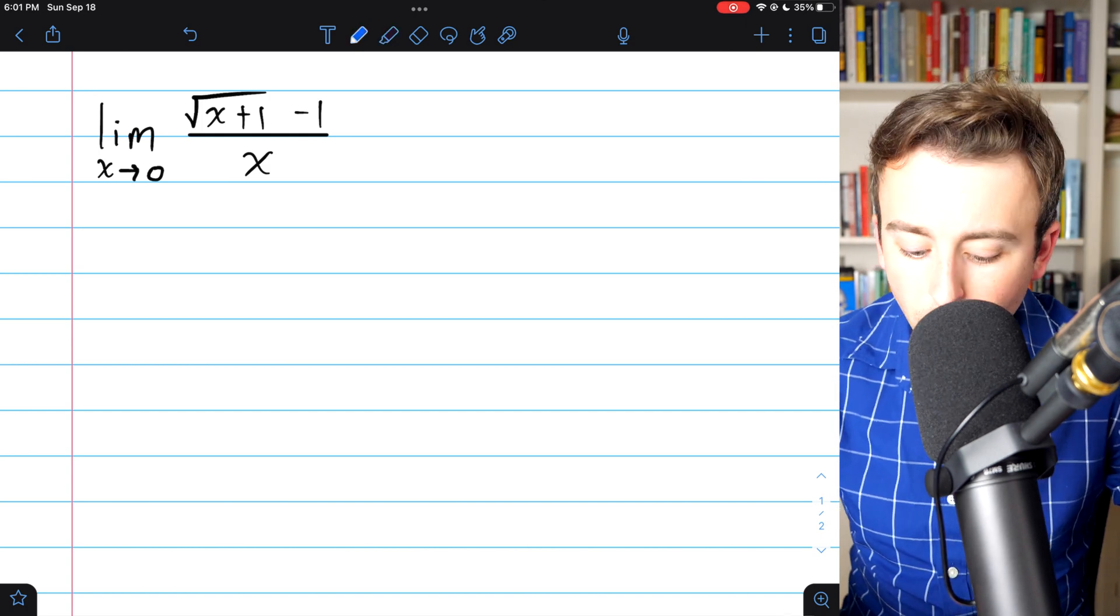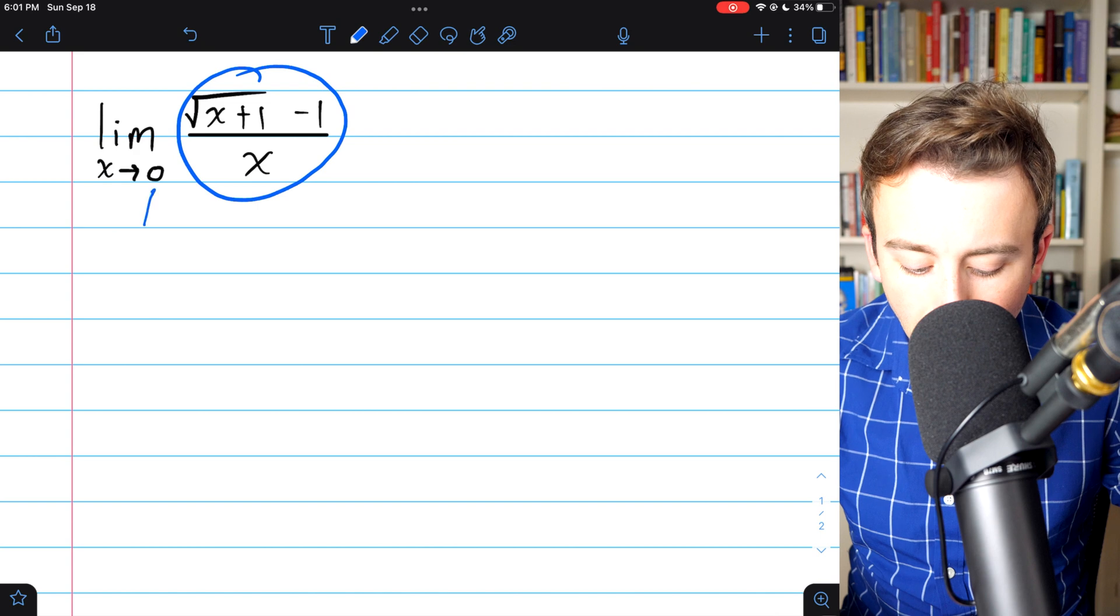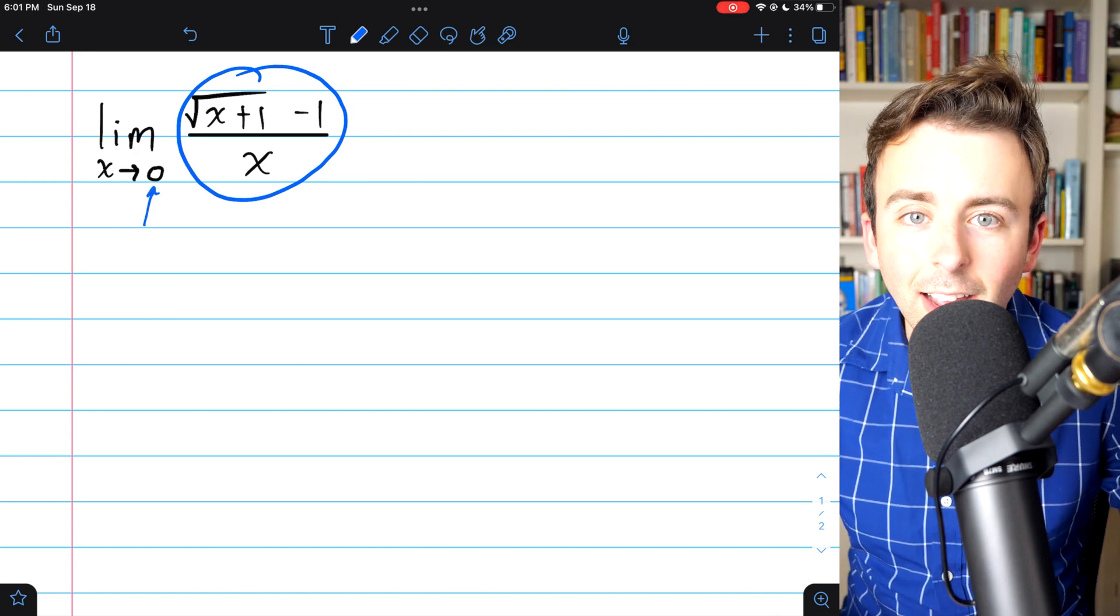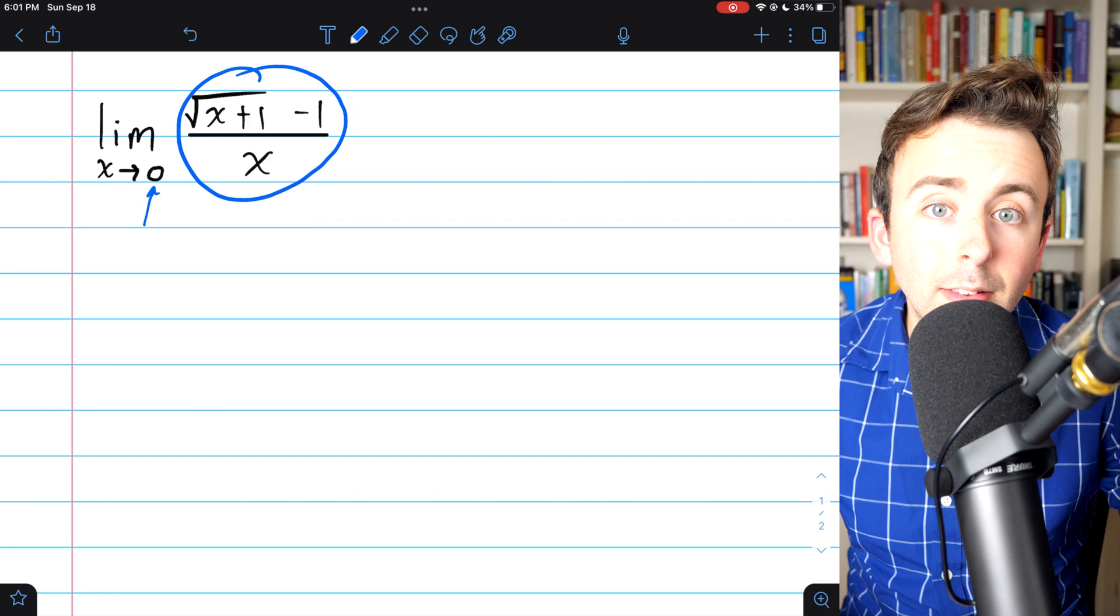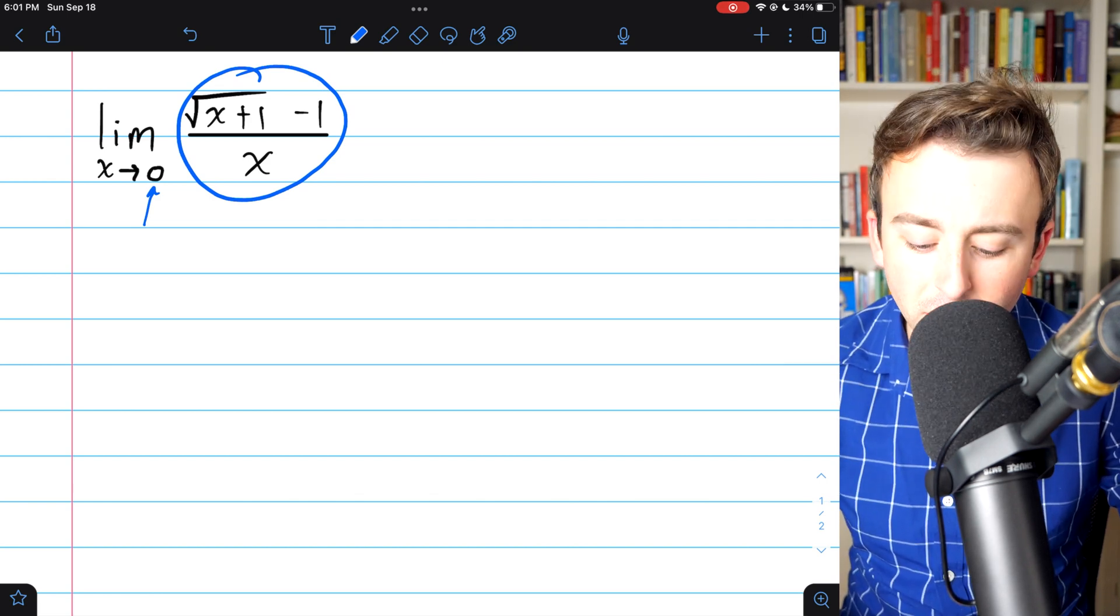The idea is that we have a function like this, which is discontinuous at the value of interest, in this case, x equals zero. But if we rationalize the numerator or denominator, we may be able to remove that discontinuity.